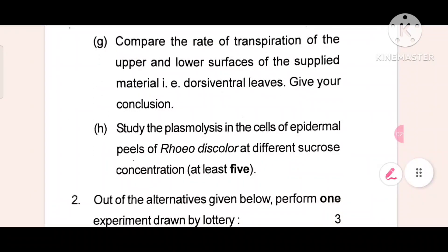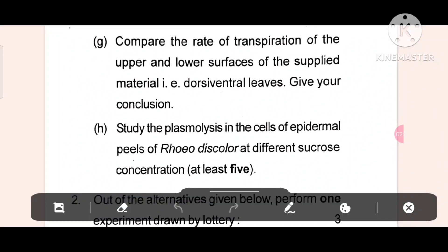Number G, compare the rate of transpiration of the upper and lower surface of the supplied material, that is dorsiventral leaves. Give your conclusion.